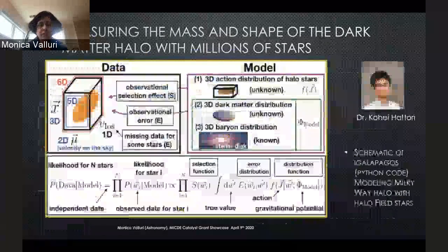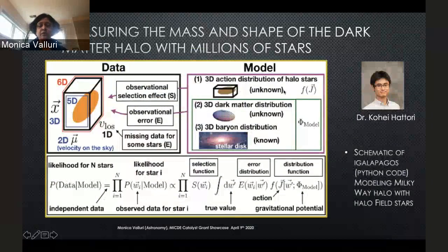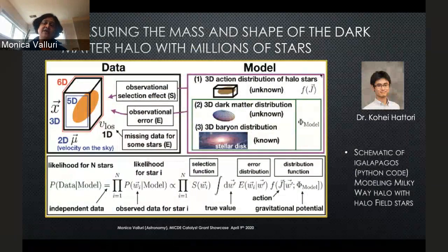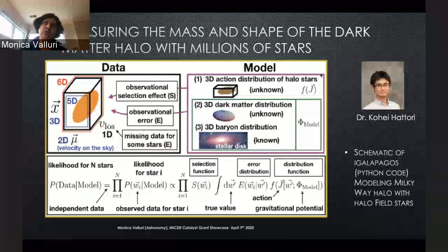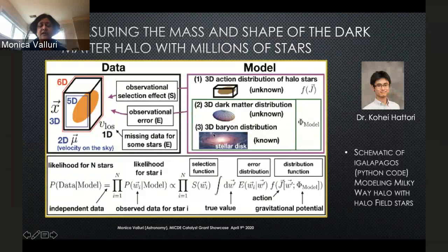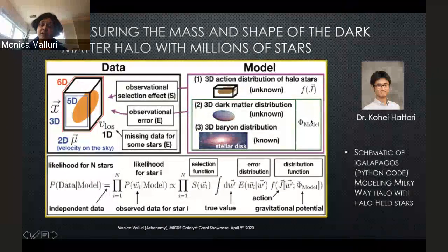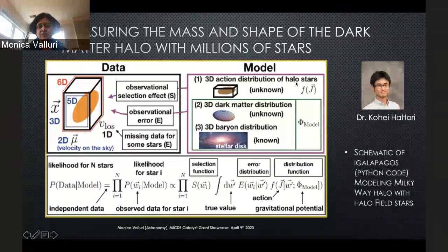The way we're going to do this is by what's called distribution function fitting. We assume a distribution function which describes the stars — giving the density of stars per unit volume in physical space and per unit volume in velocity space. That is an unknown quantity. We also don't know what the dark matter distribution is; that's the second unknown. The normal matter — the baryonic distribution — we see from observations. The dark matter and baryons together constitute the gravitational potential, in which the stars are orbiting. The distribution function we compute has to be self-consistent with this gravitational potential.